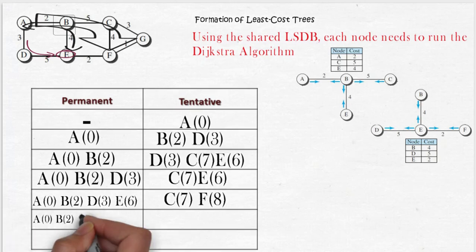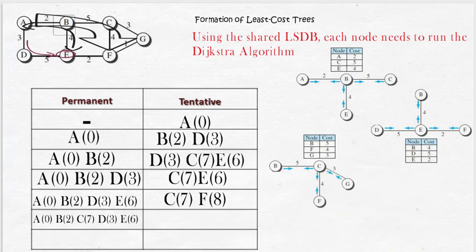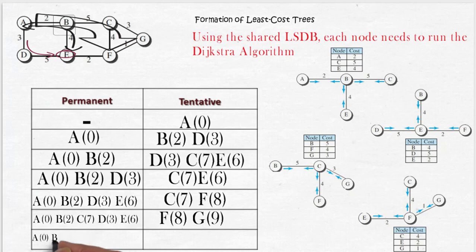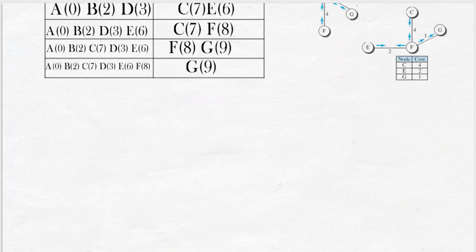Now comparing the present tentative list, C is least cost and moving it to permanent. Next, adjacent nodes to F are node E, C, and G. Here, nodes E and C are already permanent. Therefore, G with cost 9 is being considered as least cost path from node A through B, E, and F.